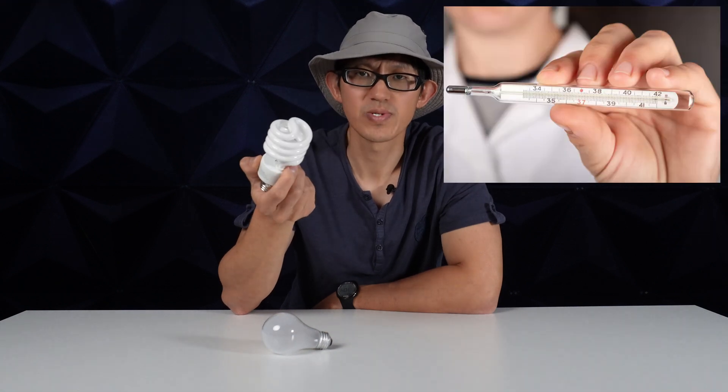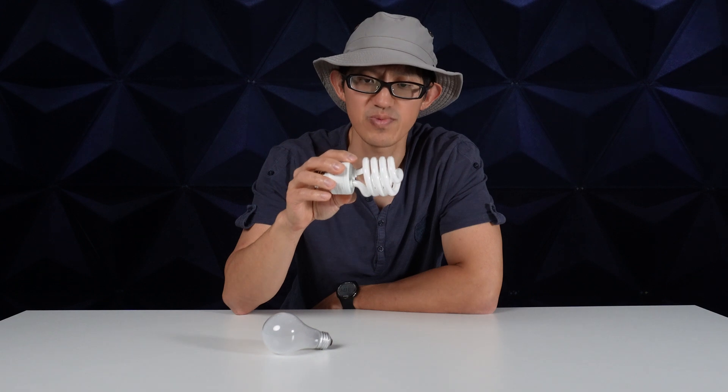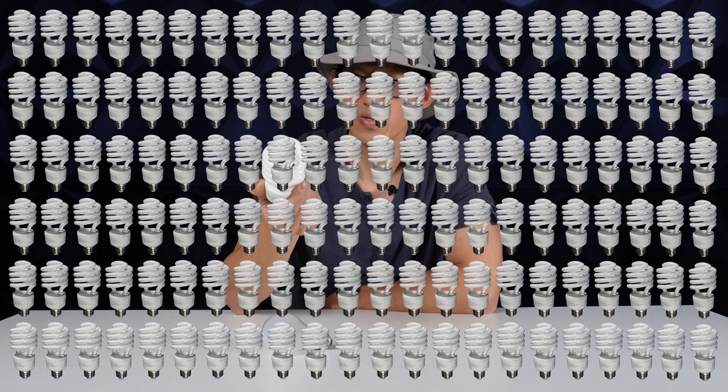Each of these CFL bulbs contains 4 mg of mercury. The old thermometers doctors used to use contain 500 mg. That's equivalent to putting 125 of these bulbs in your mouth. But why do these contain mercury in the first place?